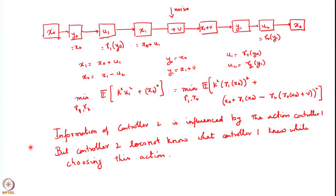Witsenhausen's counterexample, which we discussed last time, showed that this does not hold if the information pattern is not classical. If the information pattern is not classical — meaning that at some stage the information known at the previous stage is not known at the current stage, i.e., there is some loss of information across stages — then the linearity result is not true anymore. The example Witsenhausen discussed was this simple two-stage problem.